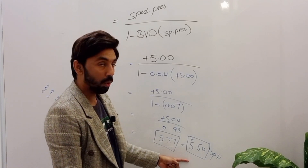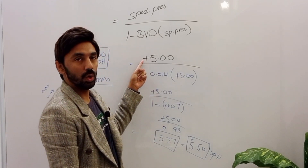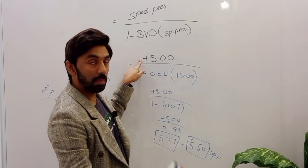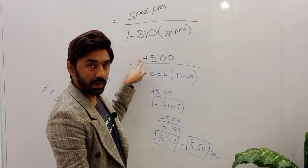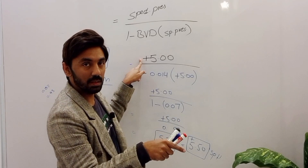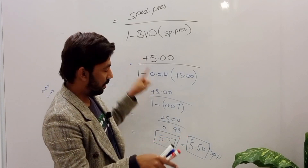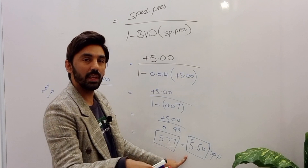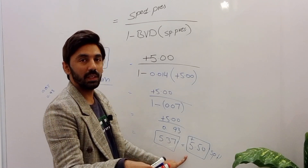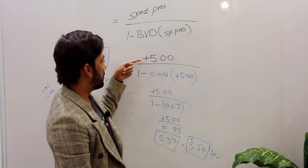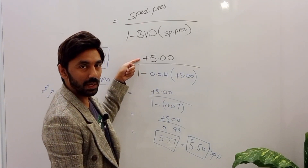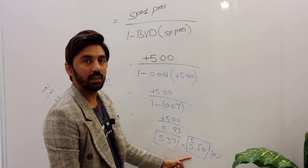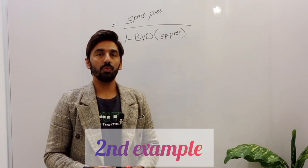We conclude that the contact lens prescription of plus 5.50 is more than the spectacle correction of plus 5.00. So if the spectacle correction is in plus, the resultant contact lens prescription will be more than the spectacle correction.